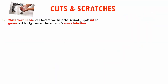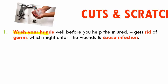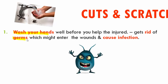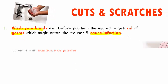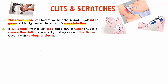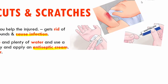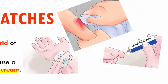When you see cuts and scratches, the first thing you need to do is wash your hands thoroughly before helping the injured person. By washing your hands, you get rid of germs that might enter the wound and cause infection. If the cut is quite small, wash it with soap and plenty of water, use a clean cotton cloth to dry it, apply an antiseptic cream, and cover it with a bandage or plaster. This is applicable only if the wound is small.